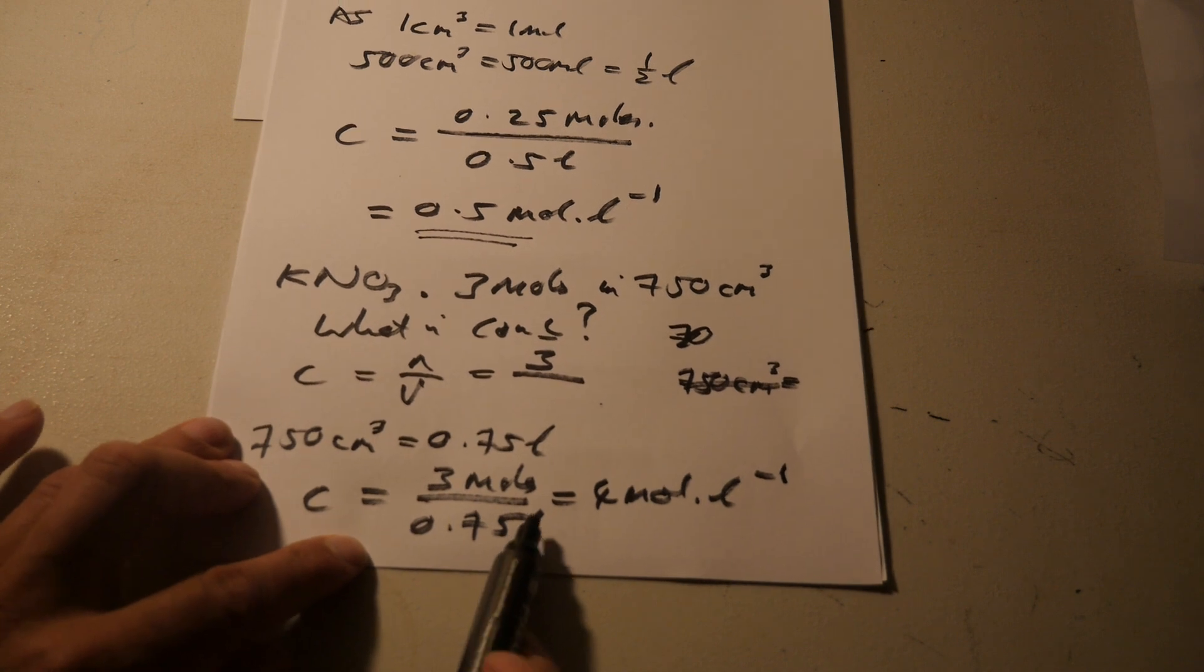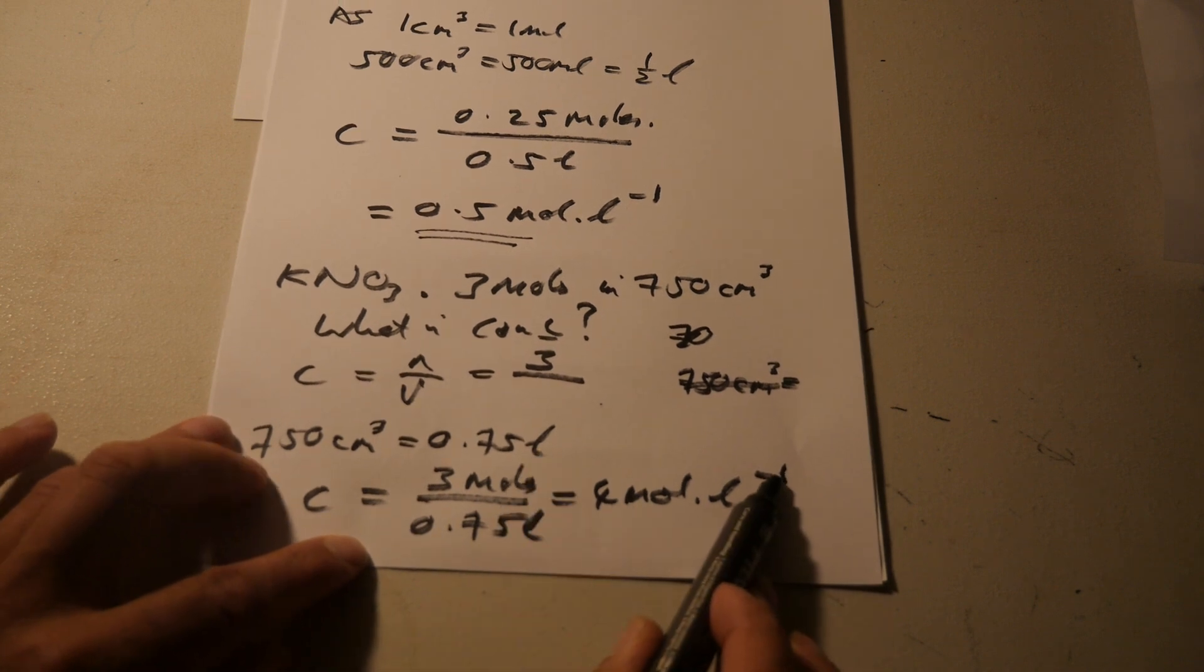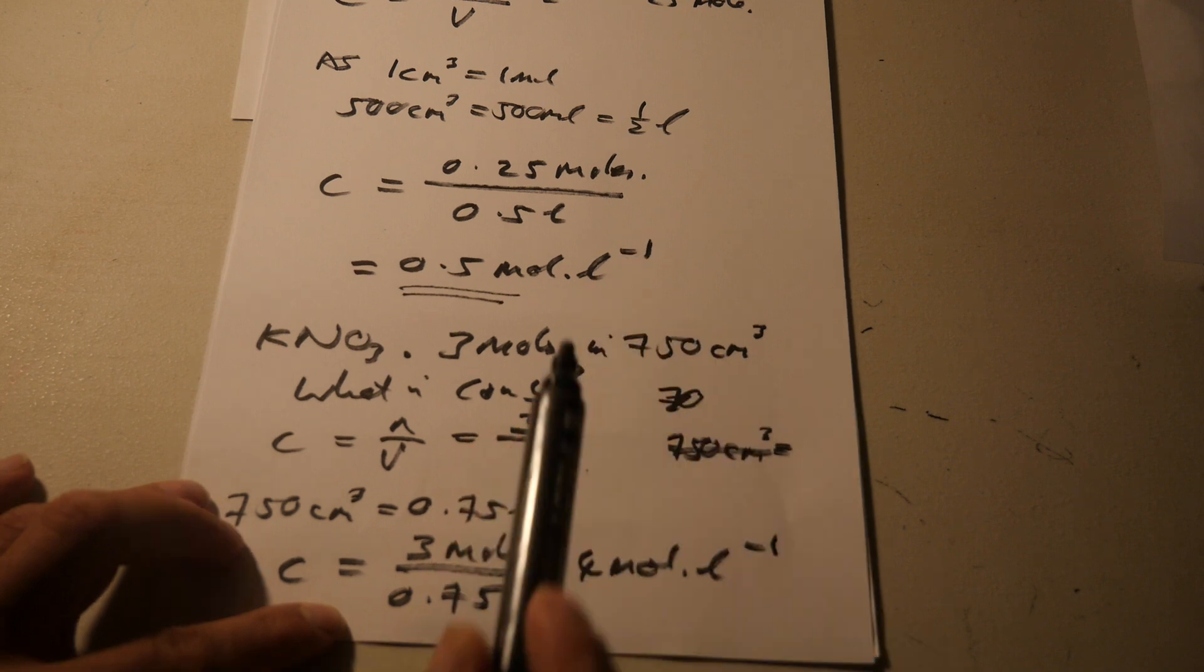So, equals 4 moles per liter. Because the L, because the liters comes up above, it becomes minus 1 to the power of minus 1. That means per.